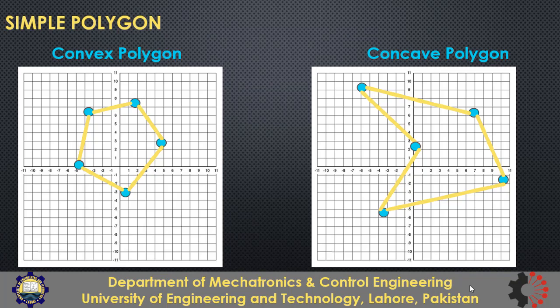Now let's see how to differentiate between a convex and concave polygon. One way is to find the interior angles. For a convex polygon, all interior angles are always less than or equal to 180 degrees. For a concave polygon, there will be at least one interior angle greater than 180 degrees. There is another method as well, and it is up to you to use either one or even explore another approach.